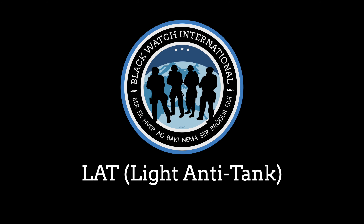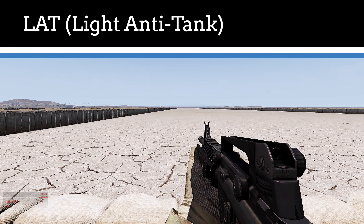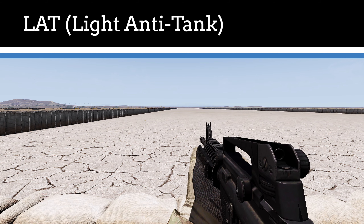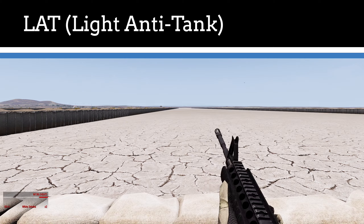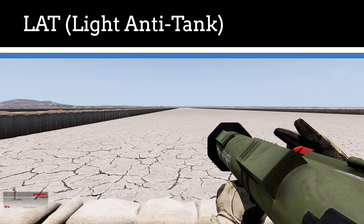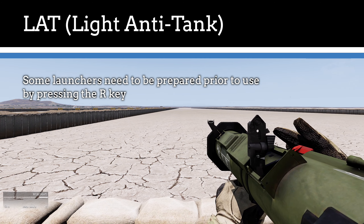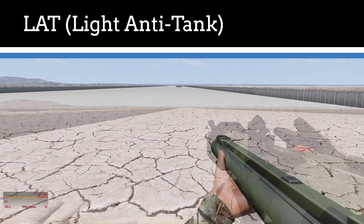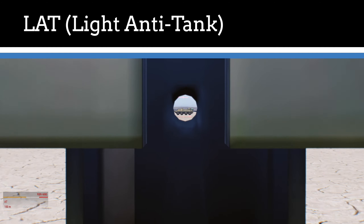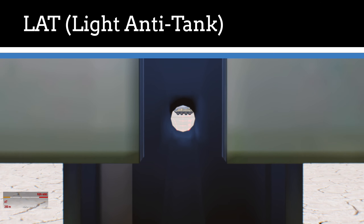Light anti-tank. The first category of launchers are the light anti-tank launchers, sometimes referred to as LAT. These are operated from within a squad by anti-tank riflemen. Some launchers such as the M136, otherwise known as the AT4, and M72 Law will need to be prepared before they can be used. In order to do this, press the R key which will slide up the sights and remove the safety. There is a wide variety of scopes and sights when using different launchers. Some launchers use simple iron sights for aiming. These can be ranged up and down using the Page Up and Page Down keys.